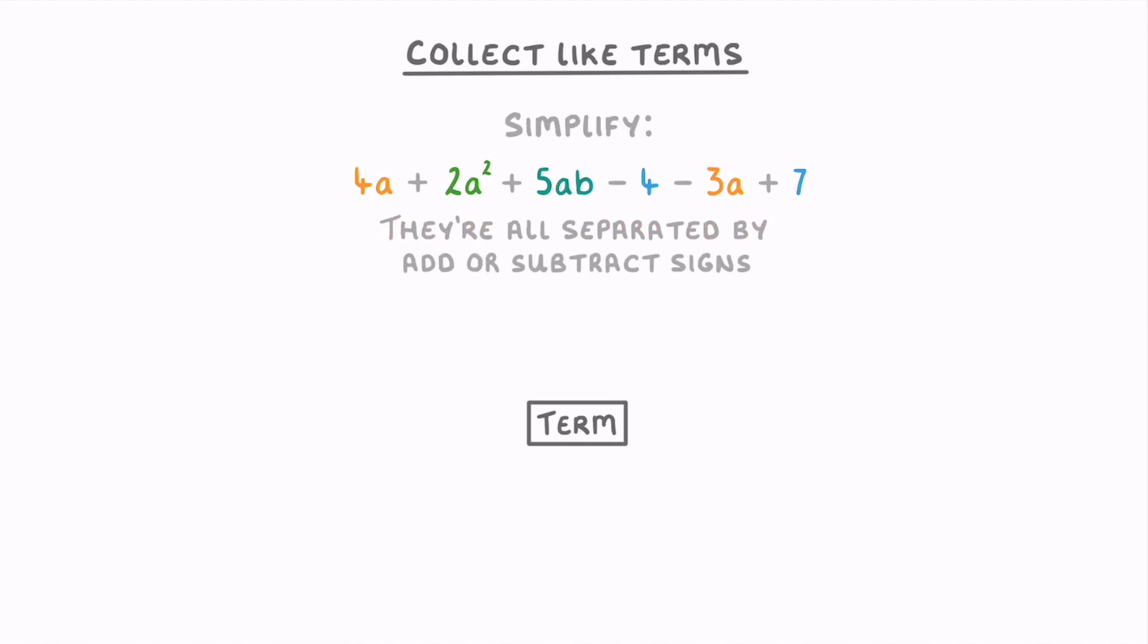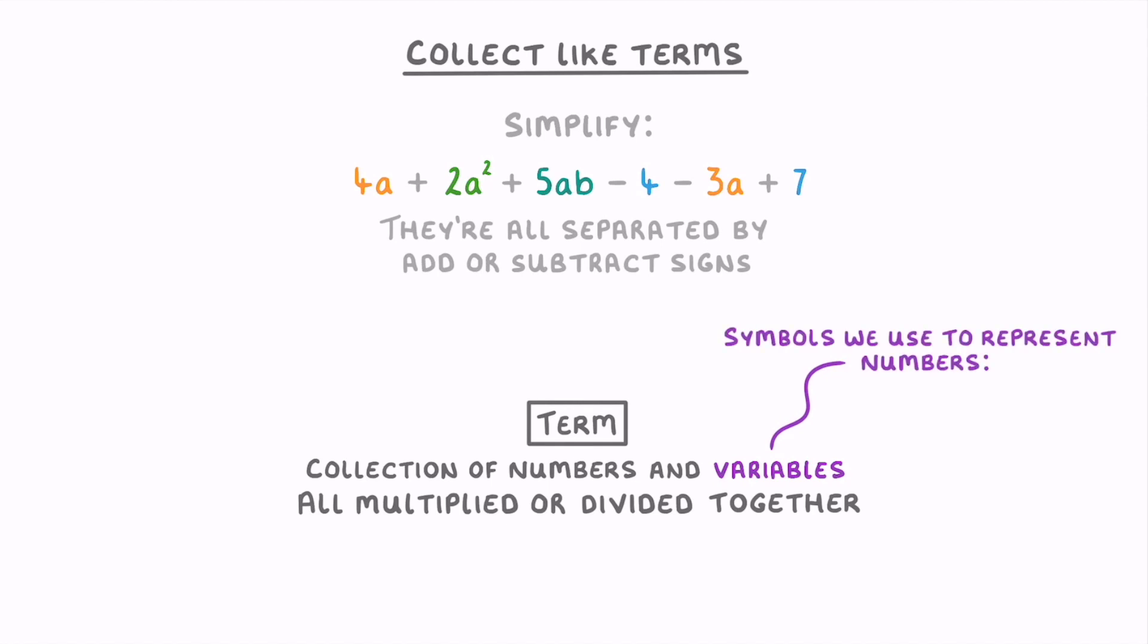If you wanted to describe it, a term is just a collection of numbers and variables that are all being multiplied or divided together. And all I mean by variables are the symbols that we use to represent numbers, like a or b.